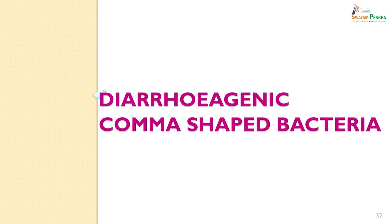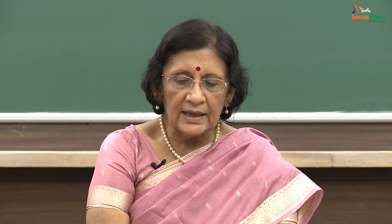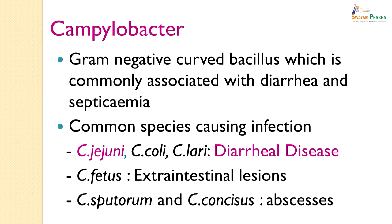There is another diarrhoeogenic comma-shaped organism which is not called a Vibrio — the Campylobacter. So not everything which is comma-shaped is a Vibrio. Campylobacter are Gram-negative curved bacilli commonly associated with diarrhoea and septicaemia. The common species causing infection in man are Campylobacter jejuni (the commonest cause of diarrhoeal disease), Campylobacter coli and Campylobacter lari. Campylobacter fetus usually presents with extra-intestinal lesions. Campylobacter sputorum and Campylobacter concisus often cause periodontal infections.